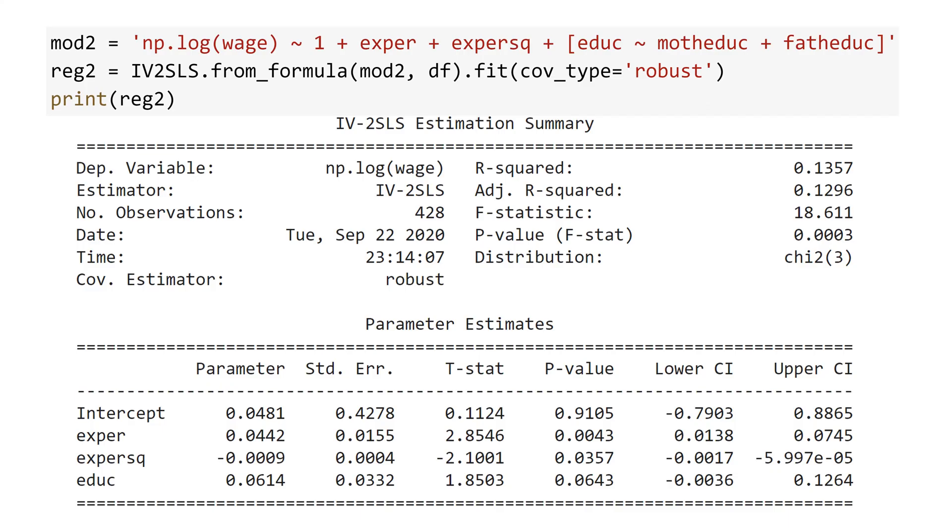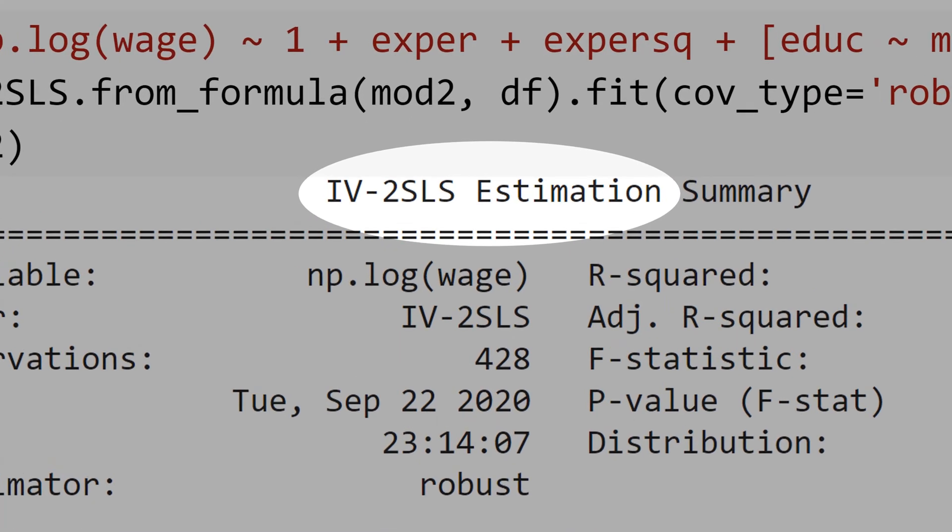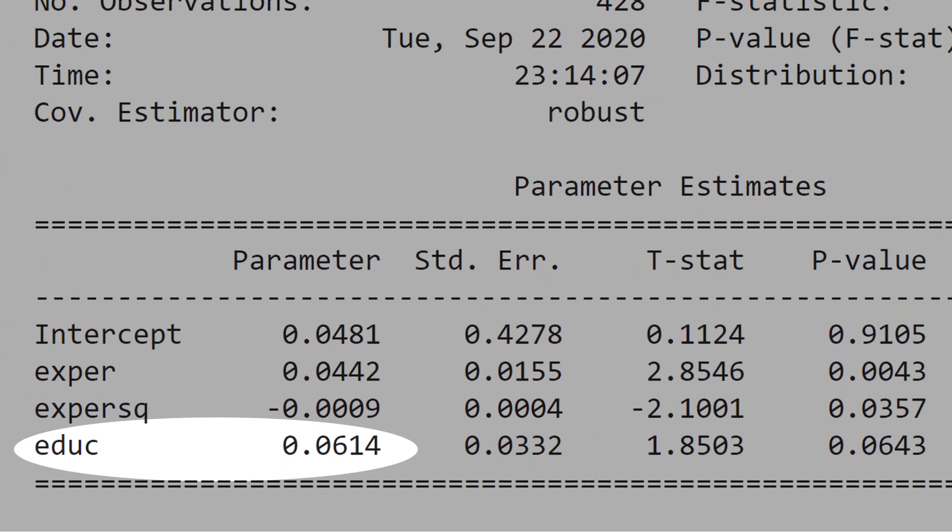Let's see the result. See the title, IV two-step least square estimation. And you got a different result for education. Now, each year of education is associated with an increase of 6% in the salary.